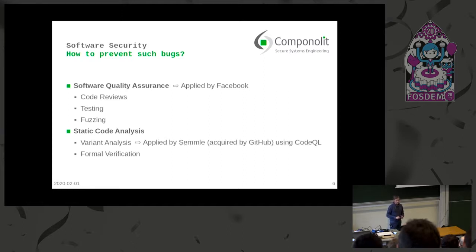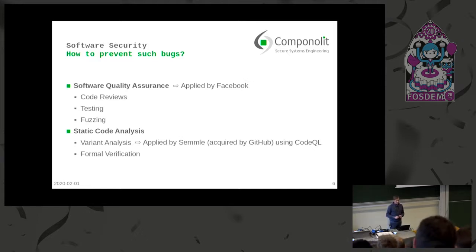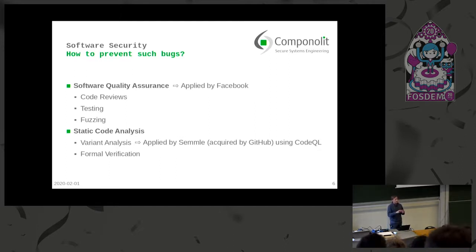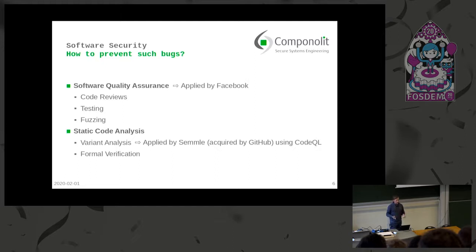A company called SEMMLE, now acquired by GitHub, used a tool called CodeQL which does variant analysis. What variant analysis does is look for patterns of known vulnerabilities and search for those patterns in the code. But the drawback is we can only look for patterns which are known to us — if there are unknown vulnerabilities, we cannot find them.